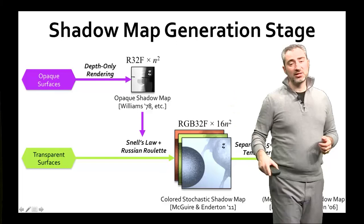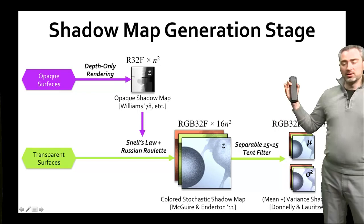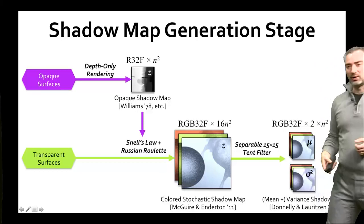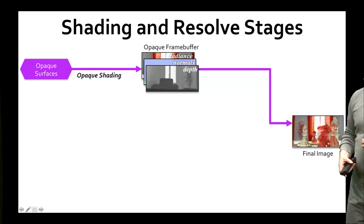That would be too expensive to sample in real time, so we take a 15 by 15 separable tent filter, blur it down, and create a Donnellan-Loritzin-style mean invariant shadow map. That has two channels: the colored means and the colored variances, downsampled to the regular resolution of the surface.